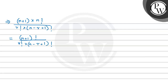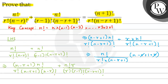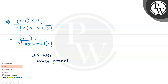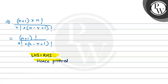We can see this matches the RHS. So, LHS is equal to RHS. We have proved the question — hence proved — using the key concept of n factorial, where we subtract 1 and keep on multiplying the numbers until we reach the number 1. I hope you understood the explanation and the proof.